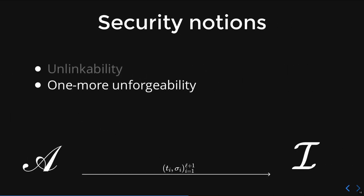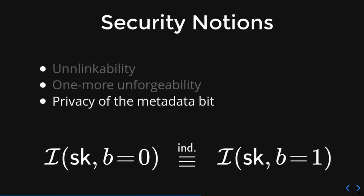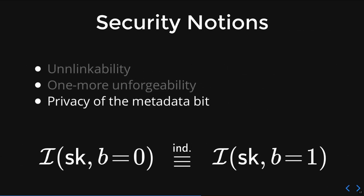One more unforgeability instead protects the issuer. It says that it is difficult for the user to spend L plus one valid tokens after interacting with the issuer L times. In the case of a private metadata bit, we allow the server to provide L issuances for each bit, but ask for L plus one forgeries on the same bit by the adversary. Finally, privacy of the metadata bit says that an issuance session with a bit set to zero should be indistinguishable from an issuance session with a bit set to one. In the indistinguishability game, the adversary is also able to observe multiple sessions, even for bits of their own choice, and then they must make a guess on a challenge session.